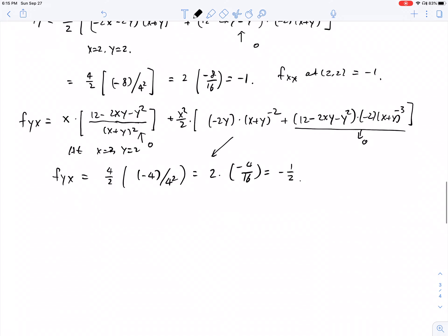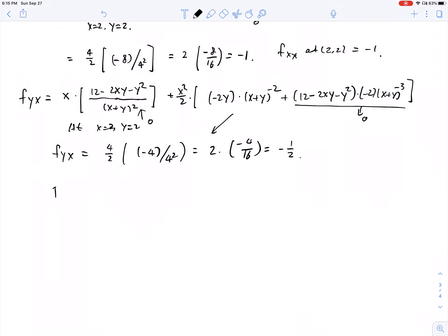And there is no doubt that now we're going to be able to find D. D is f_xx times f_yy minus f_yx squared, and that's going to be negative 1 squared minus negative 1 half squared, which is 1 minus 1 over 4, and 3 over 4, that's positive. So we have f_xx is negative and D is positive, so (2,2) is a local maximum.